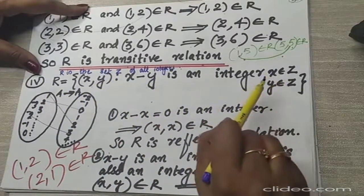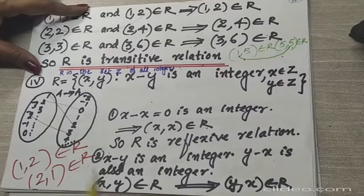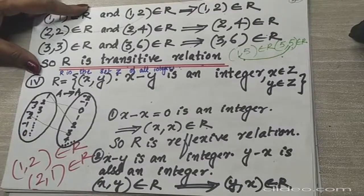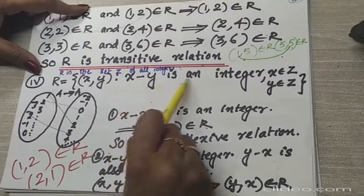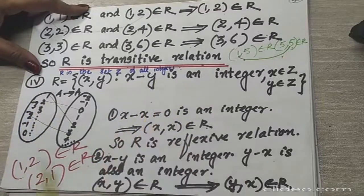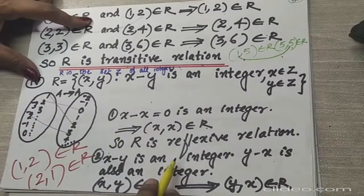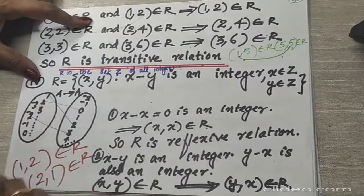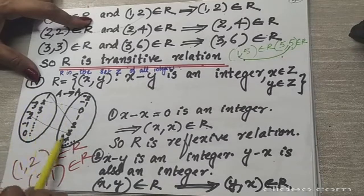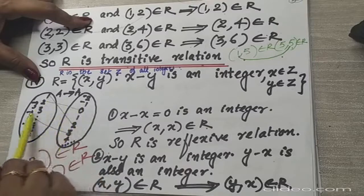Here x belongs to Z and y belongs to Z. This means the domain and co-domain are both the collection of all integers — negative numbers, 0, 1, 2, 3, 4, positive numbers. In A cross A, infinitely many ordered pairs will be there, such as (-3,-2), (-3,-1), (-3,0), (-2,2), (-2,3), (-1,4), (1,-2), (2,1), and so on.